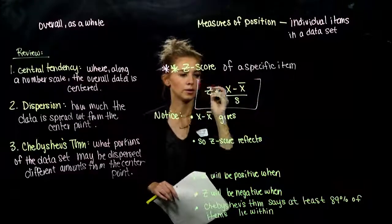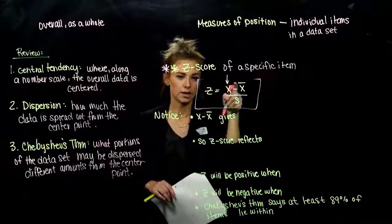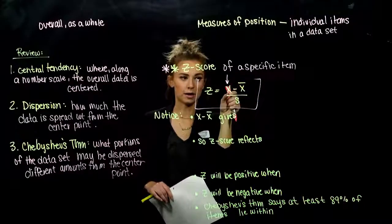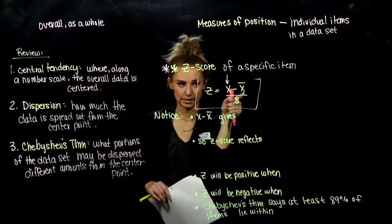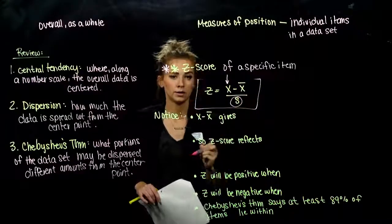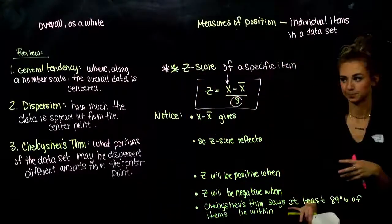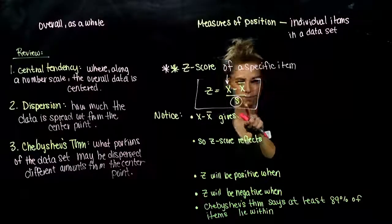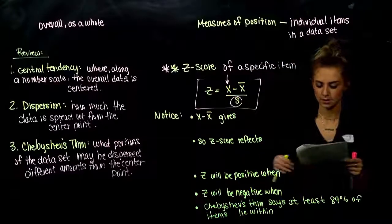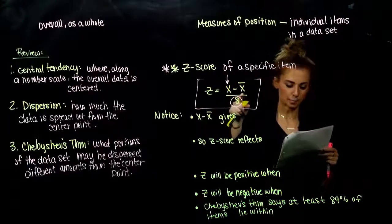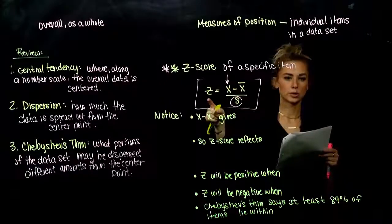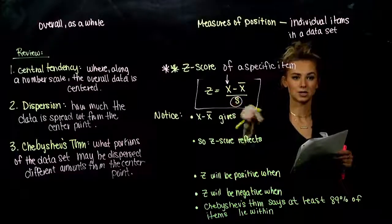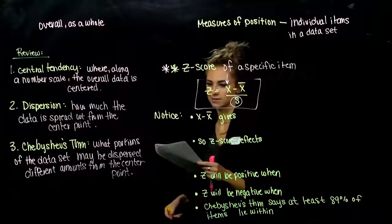How do we calculate the Z-score? We have our data item X, we remove off the average — the mean — to figure out how many deviations away from the mean it is, and then we divide by the standard deviation number. If X is the data item in a sample with mean X-bar and standard deviation S, then the Z-score is found by taking how far away from the mean the data item is, divided by the standard deviation, to calculate the number of deviations it's actually away.